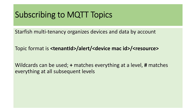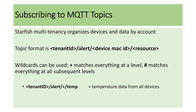Wildcards can also be used in the topic string. Plus matches everything at a given level, and pound matches everything at all subsequent levels, including the level it appears. For example, one topic string could be your tenant ID / alert / + / temp, and that would return temperature data from all of your devices, since the plus wildcard is used in place of the device MAC ID.